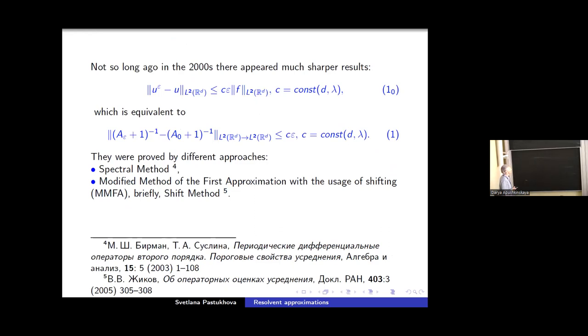Much stronger result was proved. Here is L^2 estimate for the difference of u_ε and u^0 with majorant, which is a product of ε and constant C depending on the dimension d and the ellipticity constant λ. This estimate in operator terms can be reformulated as estimate one. You see here bound on the difference of two resolvents in L^2 operator norm, with majorant C depending on the dimension and elliptic constant λ.